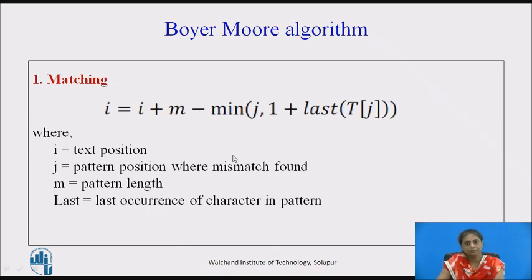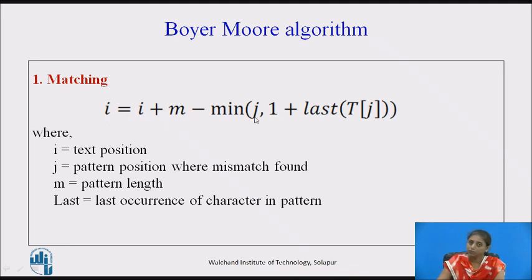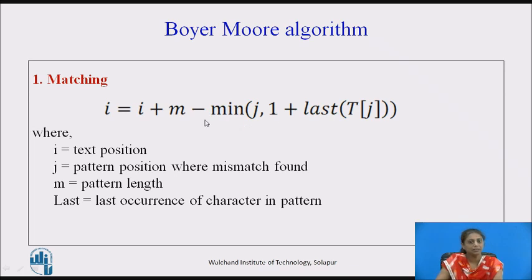The second step is finding the heuristics information. Here, I is the text position we want to shift to, M is the pattern length, and J is the position where the mismatch occurred. The formula uses the last occurrence of the mismatched character. We take the minimum of J and the last occurrence value to determine the shift, which gives us the longer shift distance.